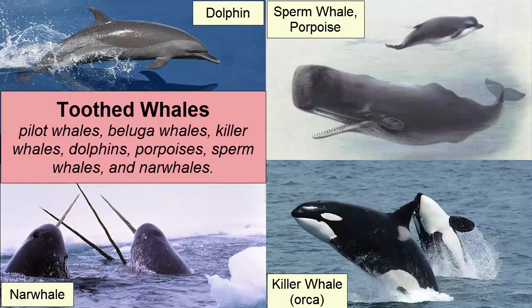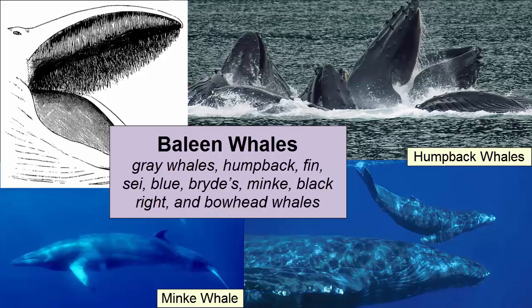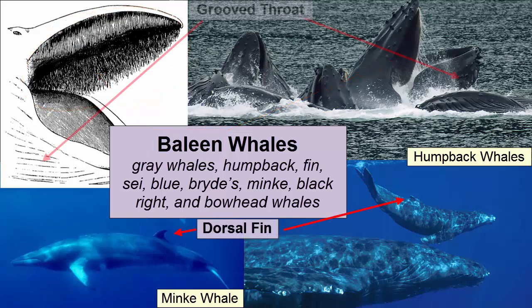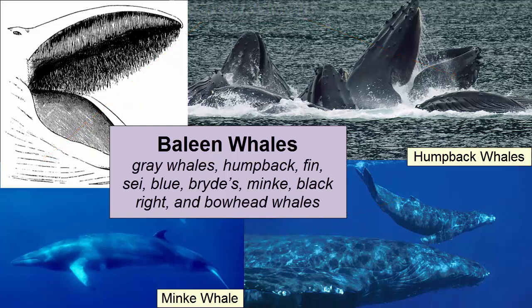Cetacea consists of two suborders. Suborder Odontoceti, or toothed whales, are predators with teeth. They include pilot whales, beluga whales, killer whales, dolphins, porpoises, sperm whales, and narwhals. Suborder Mysticeti, or baleen whales, have no teeth; instead they have plates of baleen hanging from their upper jaw used to filter food. Most have a dorsal fin and a grooved, distendable throat. They consist of gray whales, humpback, fin, sei, blue, Bryde's, minke, black right, and bowhead whales.